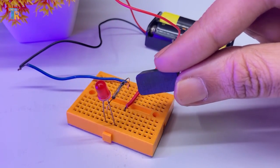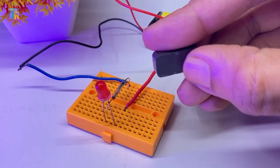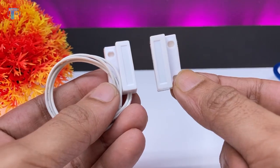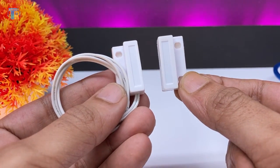You will usually find reed switches in door alarms, refrigerators as a door open-close sensor.